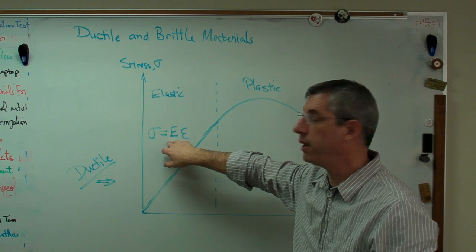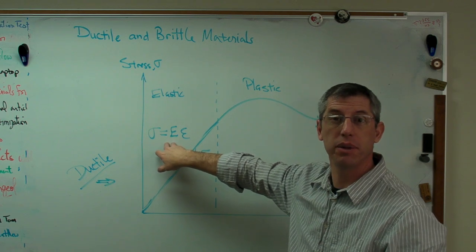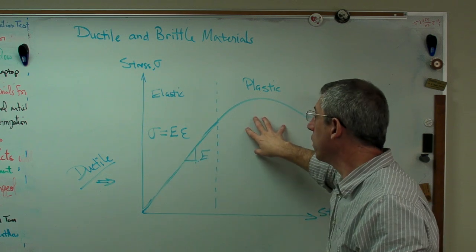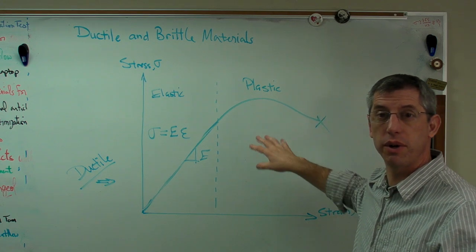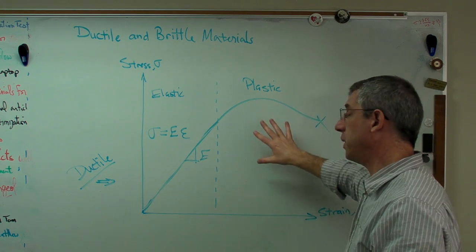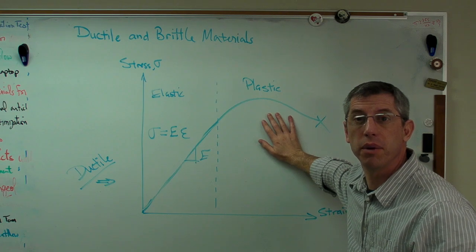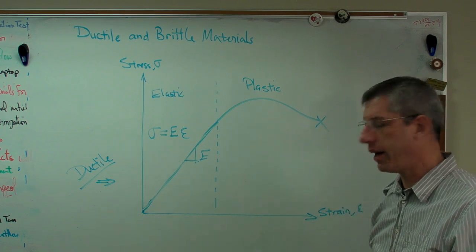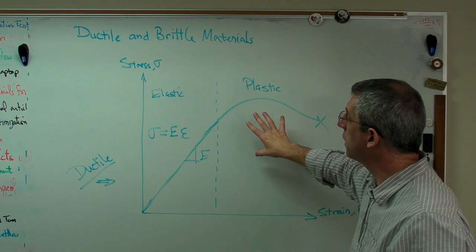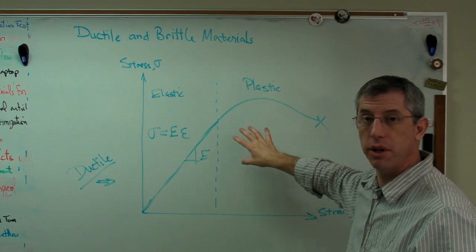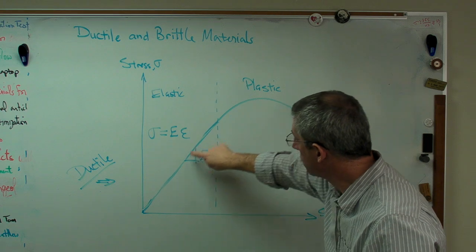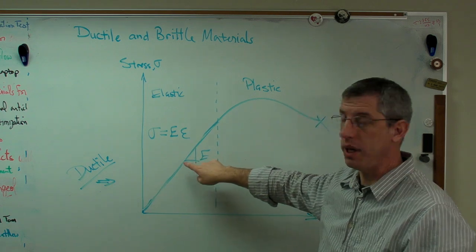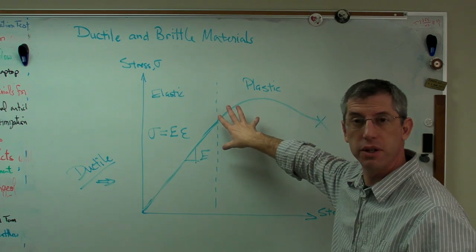Over here the relationship between stress and strain is different. It's certainly possible to do a calculation in the plastic region, people do it all the time, the math is just a little more complex. So this is a ductile material. In this region here the slope is E. In this region here the relationship is more mathematically complex.